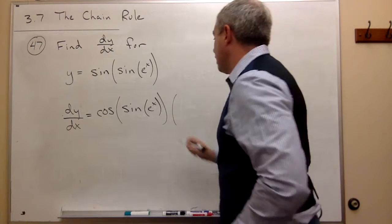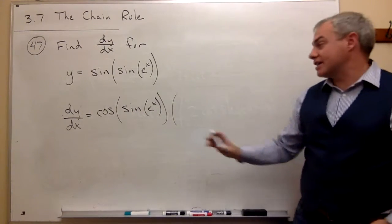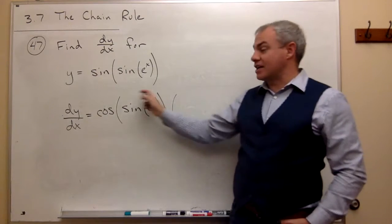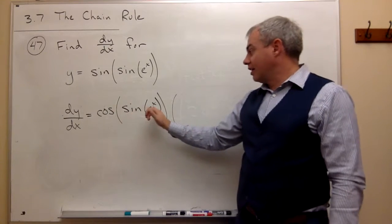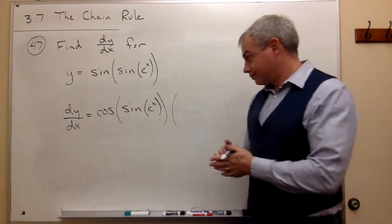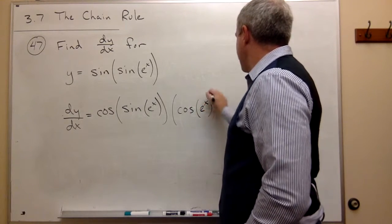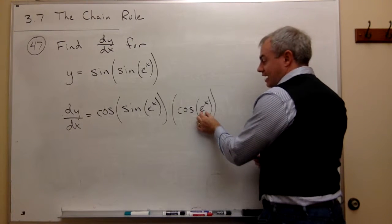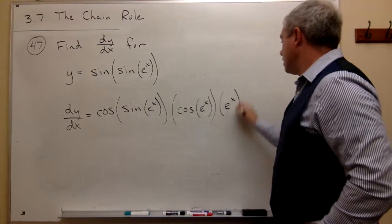So I need to multiply by the derivative of sine of e to the x. But to take the derivative of sine of e to the x, I need to use the chain rule again, because there's an outside function. The very last thing that happens in sine of e to the x is sine of something. The derivative of sine of something is cosine of that something — in this case e to the x. Then I multiply by the derivative of the inside, which is the derivative of e to the x, and that's e to the x.